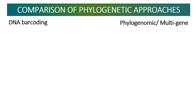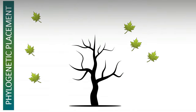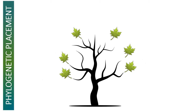DNA barcoding, phylogenomics, and multigene approaches are some approaches for phylogenetic placement and phylogenetic tree building. As these approaches have strengths as well as weaknesses, we have a great chance to combine them together. First, we need to generate a phylogenetic tree using multigene sequences, and then place DNA barcode sequences — represented by leaves on the backbone tree — in order to find the optimal position for new query species.